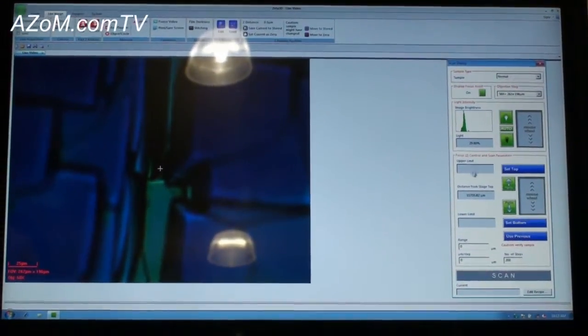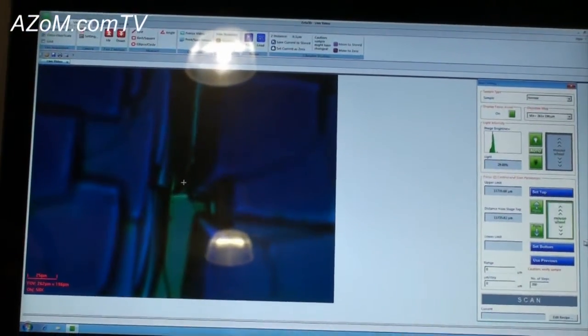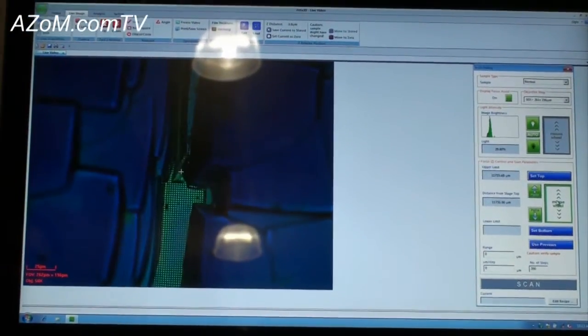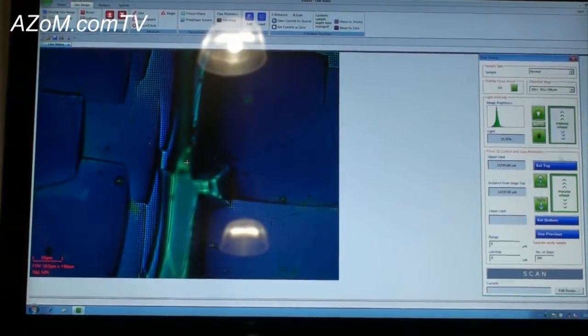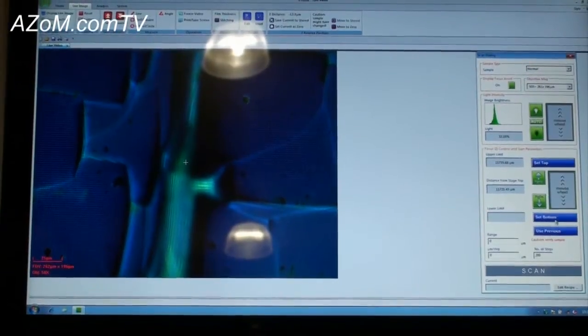To set the Z range, I want to scan through the top through the bottom. So I'll simply set top, and then I'll scan to the lowest point. Might actually give us a little more intensity for the contrast. And then scan to the lowest features. Set bottom.